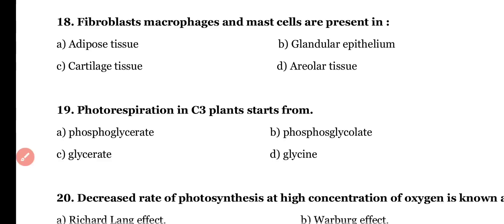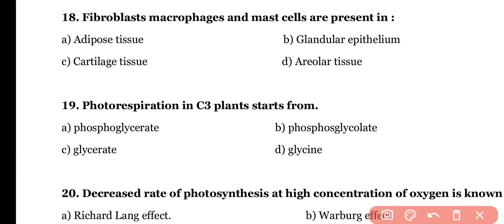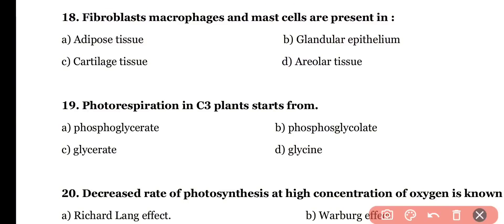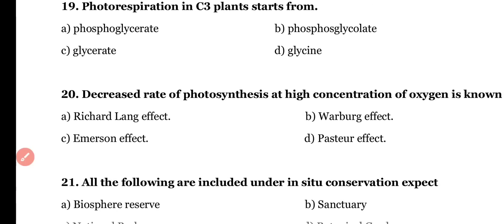Question number eighteen: fibroblasts, macrophages, and mast cells are present in (a) adipose tissue, (b) glandular epithelium, (c) cartilage tissue, or (d) areolar tissue. The correct answer is option D — areolar tissue is a type of connective tissue that contains fibroblasts as well as mast cells.